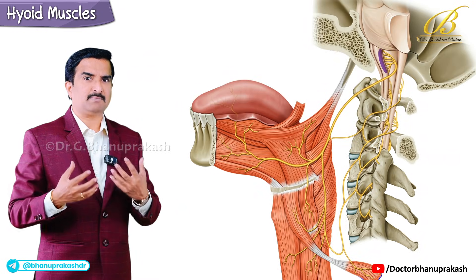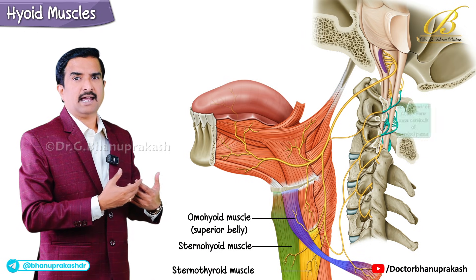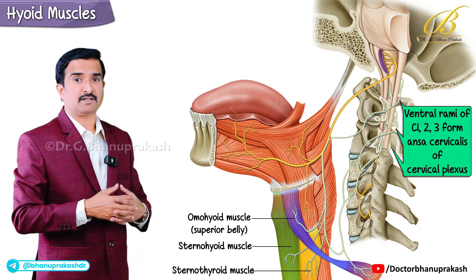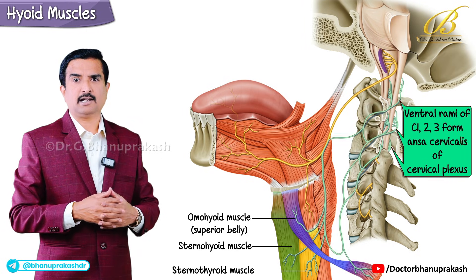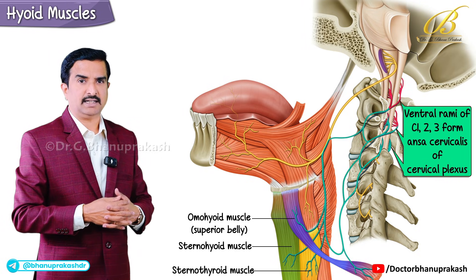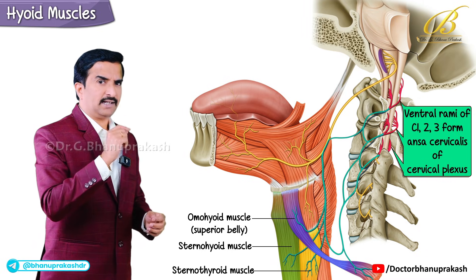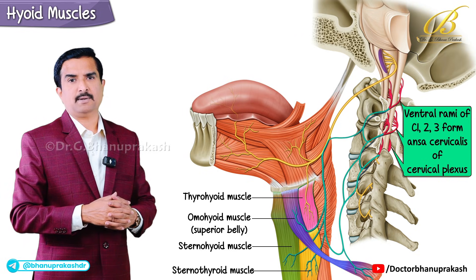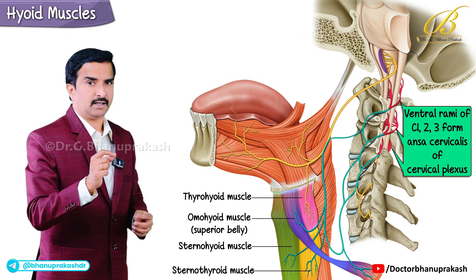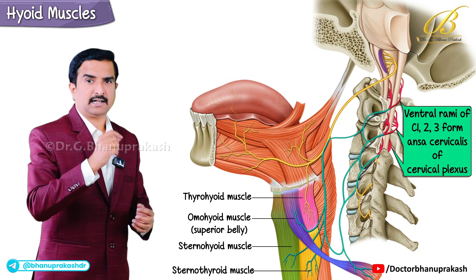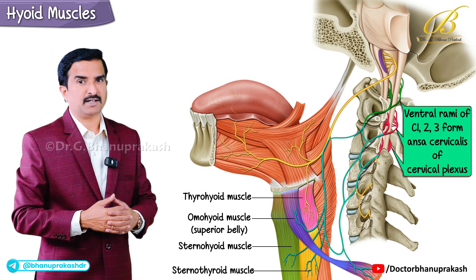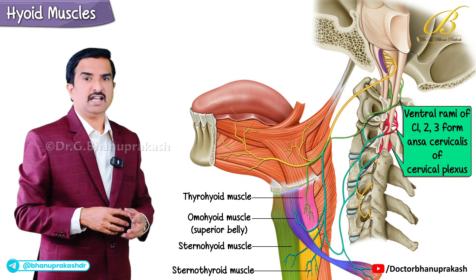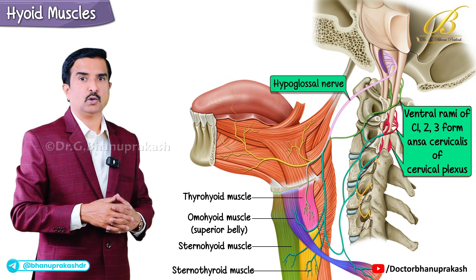Most of these muscles are innervated by the ansa cervicalis, which is a loop of nerves derived from the cervical plexus, particularly spinal nerves C1 to C3. There is one exception: the thyrohyoid muscle is not supplied by the ansa cervicalis; instead, it is innervated directly by fibers from C1 — just like the geniohyoid — and again these fibers travel via the hypoglossal nerve.